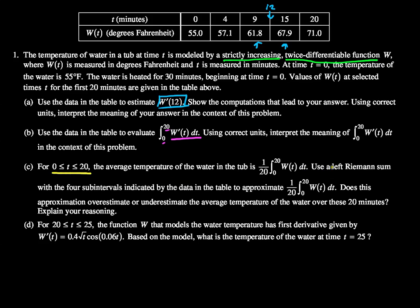Use a left Riemann sum with the four subintervals indicated by the data in the table to approximate this. Does this approximation overestimate, underestimate, or underestimate the average temperature of the water over these 20 minutes? Explain your reasoning.